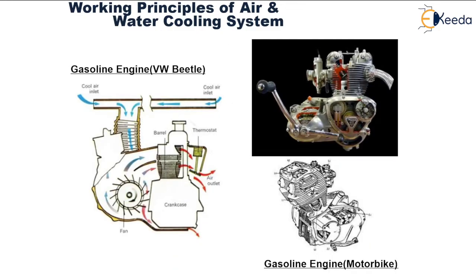Another example is a beetle gasoline engine, where cooling air is drawn in through the bellows and made incident on a fan. This fan forces the air to flow over the combustion chamber walls and over the fins, thereby heating it and throwing it out. A simple air cooled gasoline motorcycle engine is also shown in the figure.